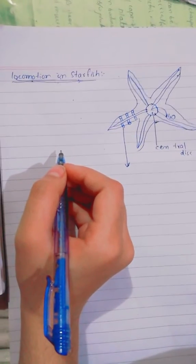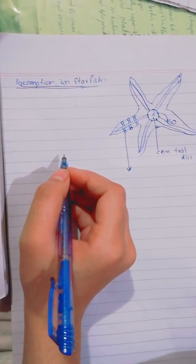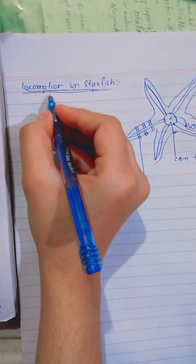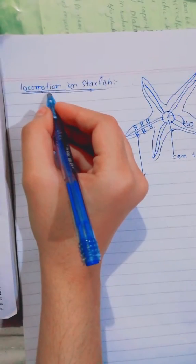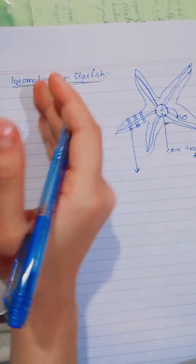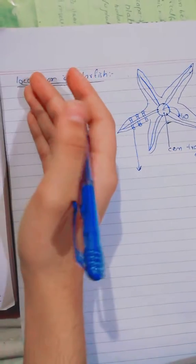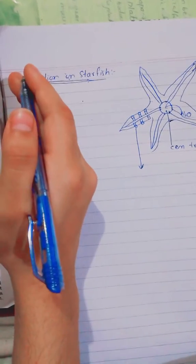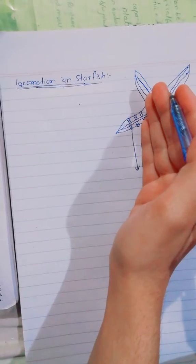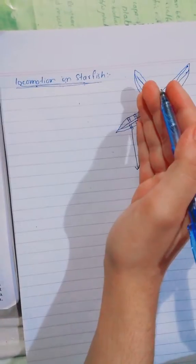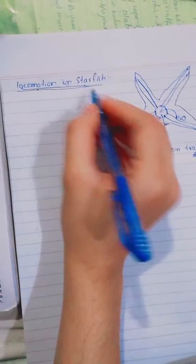Hello friends, our today's topic is locomotion in starfish. First of all, we should understand what is locomotion. Locomotion is when one animal moves from one part of earth to another or covers a distance.